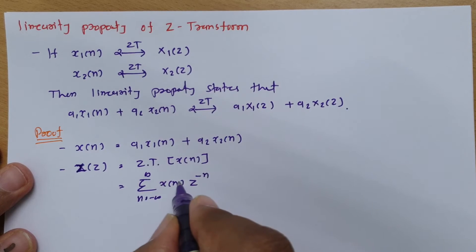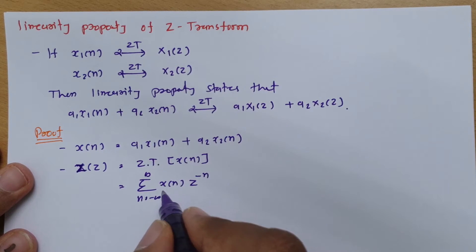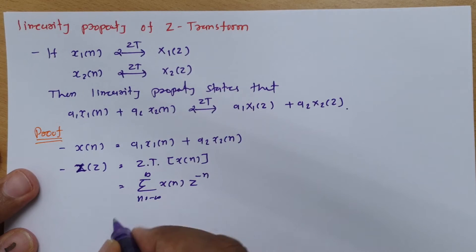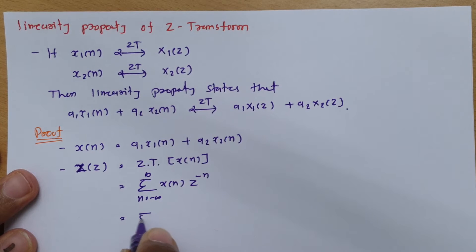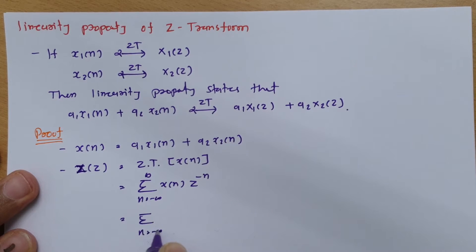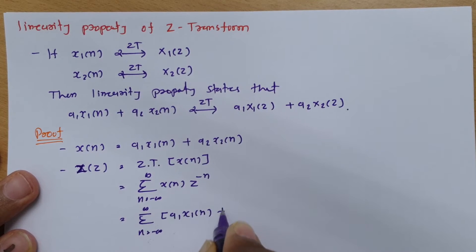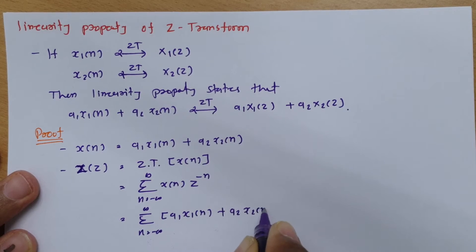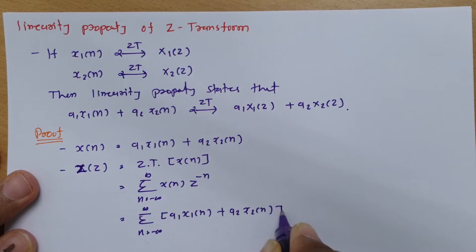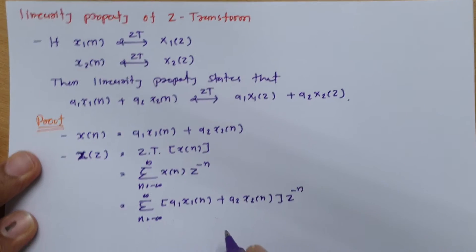Now we can place x(n) into this formula. Substituting, we get the summation from n = −∞ to +∞ of [a1·x1(n) + a2·x2(n)]·z^(−n).